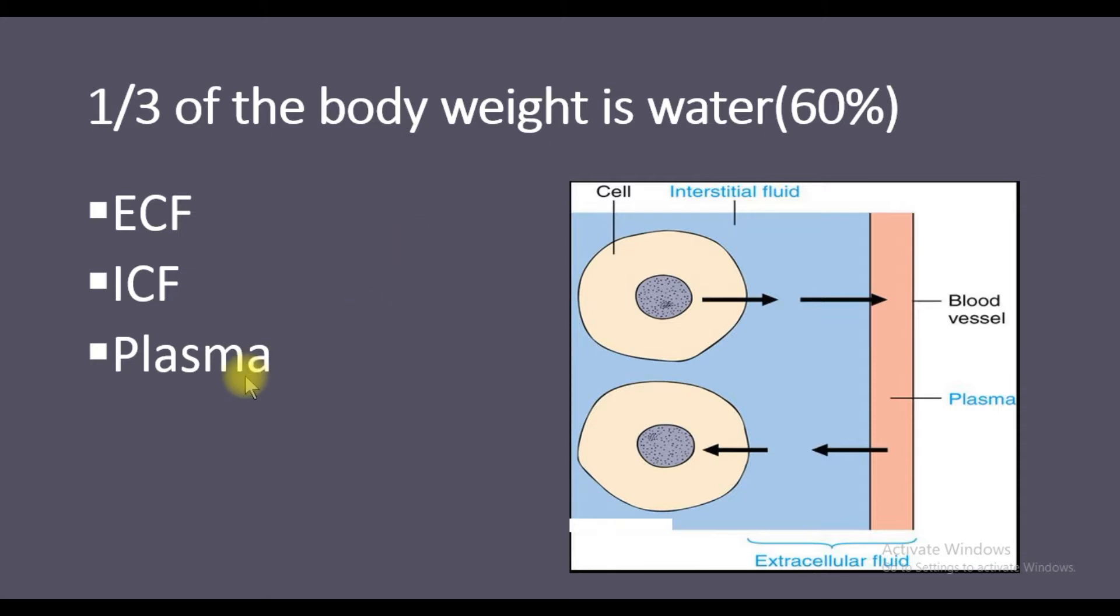The plasma part of the blood weighs about 5% of total body weight. Including the RBCs, the total blood is around 8% of total body weight.